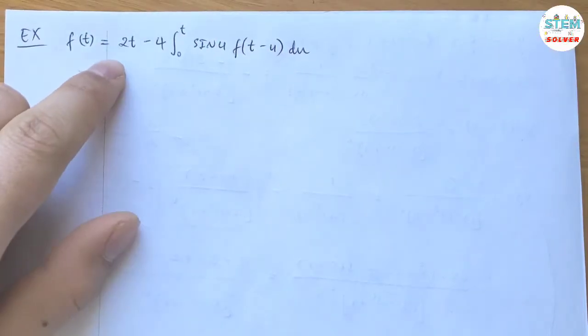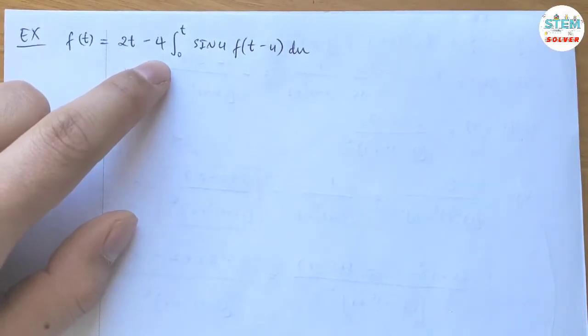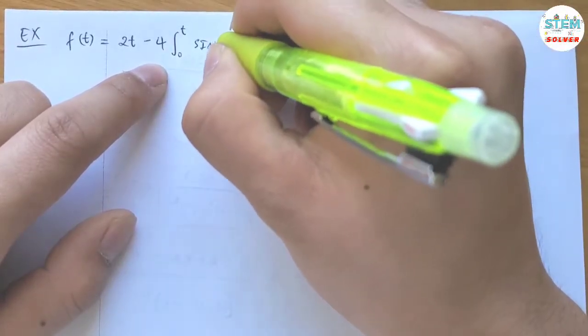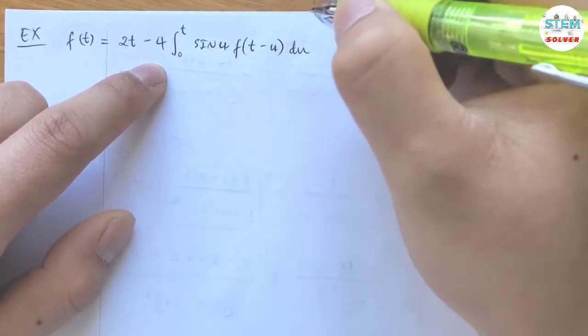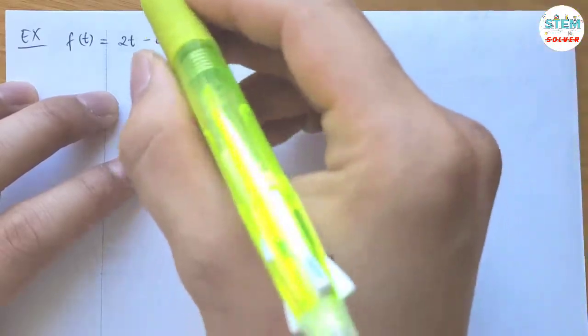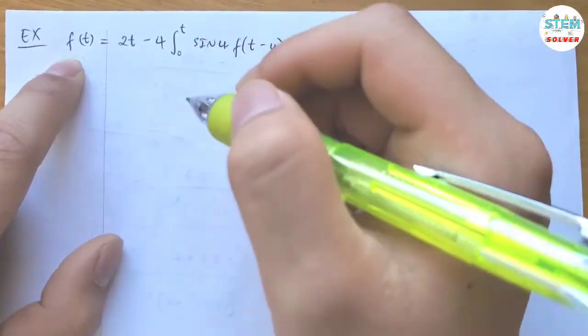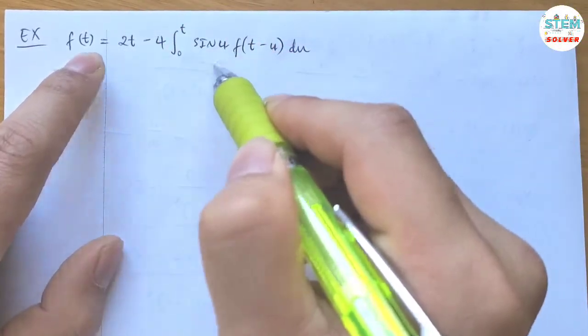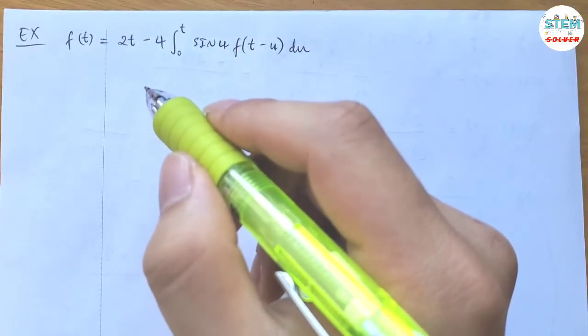Find the Laplace transform of f(t) = 2t - 4 times the integral from 0 to t of ψ(u)f(t-u)du. So this is ψ(u), not 4. ψ(u) times f(t-u)du. You cannot find f(t) directly from here, so we're going to use the convolution method.